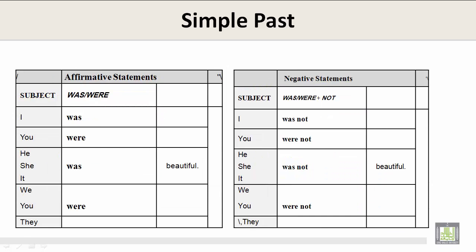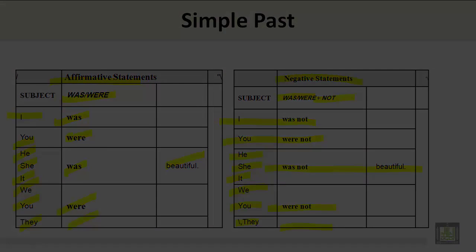Looking at was and were: I was, you were, he/she/it was beautiful, we and you were, and they were. For negative statements: I was not, you were not, he/she/it was not beautiful, we or you were not, they were not.